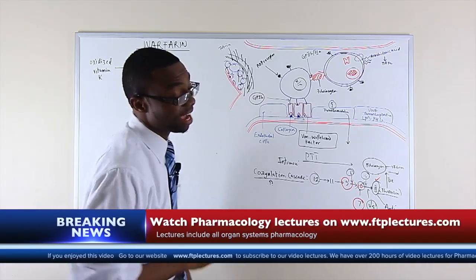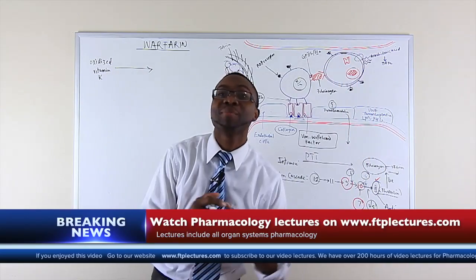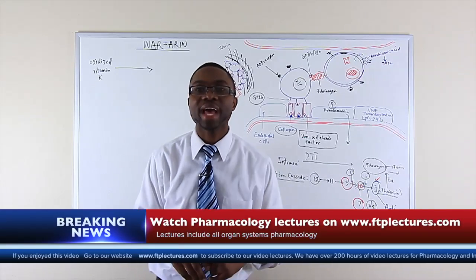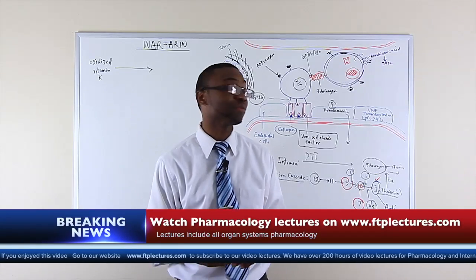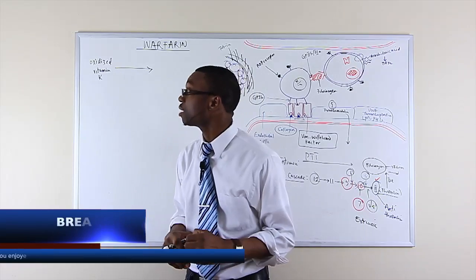Now before we move on, I have to tell you where all these coagulation factors are coming from. They're not dropping from the sky, they're made in our body. It's made in the liver. All coagulation factors are made in the liver except factor 8. So on the boards, if they want to get you, they will ask you which of the following cofactors is not made in the liver and it's factor 8, because factor 8 is married to von Willebrand factor. That's another board hint you need to know.